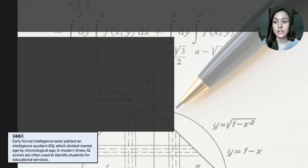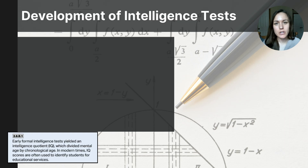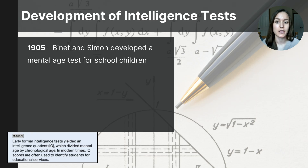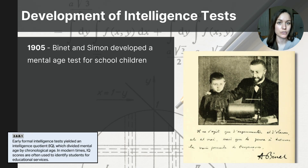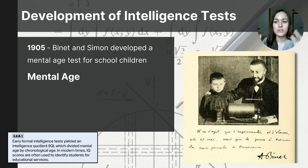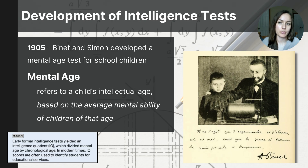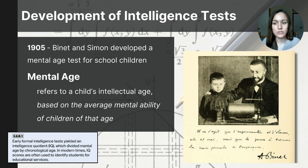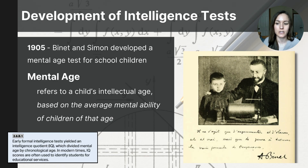Now that we've discussed theories about what comprises intelligence, let's go over how intelligence has been measured over time. The history of intelligence testing began in 1905 with Alfred Binet and Theodore Simon, who developed a mental age test to identify students in France needing educational support. This test measured children's cognitive abilities relative to their chronological age — the actual age of the child in years. Mental age refers to the age level at which the child performs intellectually based on the average abilities of children at that age. In the photograph here, you can see Alfred Binet assessing the mental age of a child.